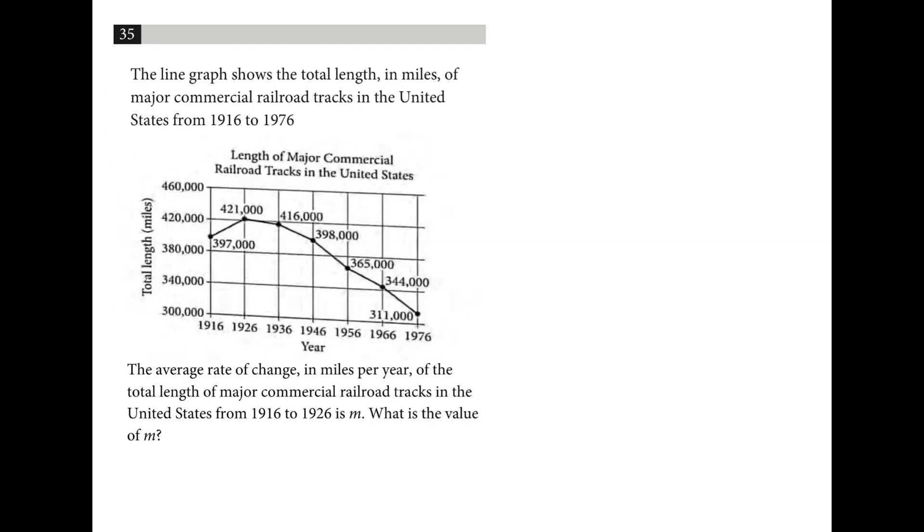The trickiest part about this problem to me is that you have to count over every 2 for every 1. The scale is different for the x and the y. So we're looking from 1916 to 1926. We went from 421,000 to 397,000. And this is over a 10 year period. So 24,000 divided by 10 is just 2,400.